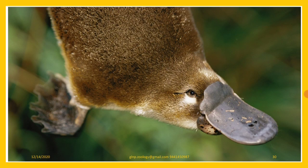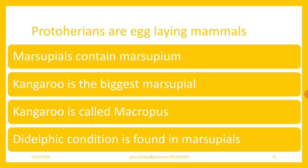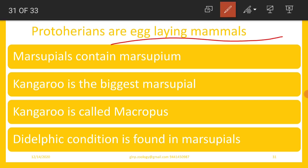Prototherians are primitive mammals, also called unfinished mammals. They exhibit gynandromorphism where male prototherians have functional mammary glands and secrete milk to feed their young ones. Prototherians are egg-laying mammals — they are exceptions to the general viviparous nature of mammals — and they are provided with a cloaca. Marsupials are metatherians which contain a marsupium.